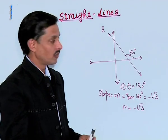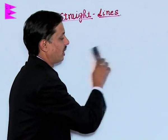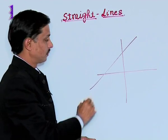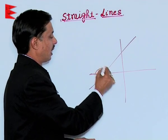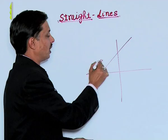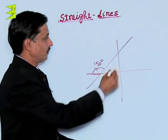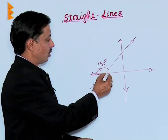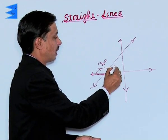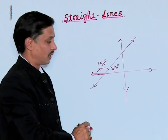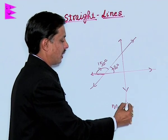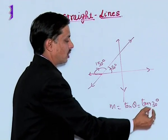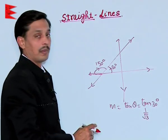Taking another example: if a straight line makes an angle of 150 degrees but we observe this is in the clockwise direction from the X-axis to the line, then 30 degrees will be taken as the positive angle. The slope M = tan(30°) = 1/√3.